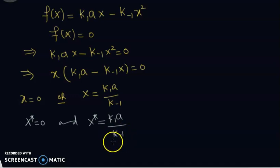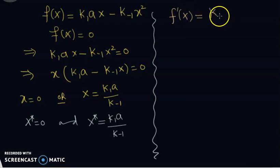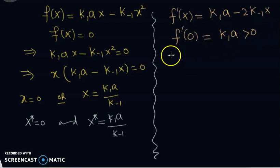Now we will look at the stability of these two equilibrium solutions and see which one is stable. For that we can use the linearization theorem. The derivative of F with respect to X is K₁A minus 2K₋₁X. So F'(0) is going to be K₁A, which is positive because K₁ and K₋₁ are positive rate constants. This implies that X* = 0 is unstable, or you can say it's a source or repeller.